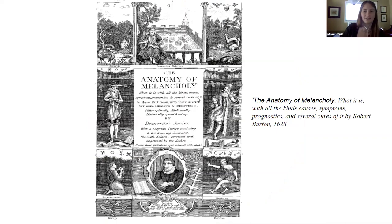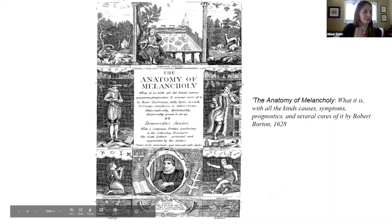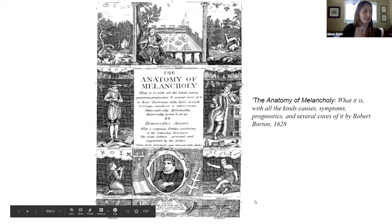This is actually the cover of a scientific novel called 'The Anatomy of Melancholy: What Is It, with All the Kinds, Causes, Symptoms, Prognostics, and Several Cures.' This is from 1628. In one corner we can see religion is very important, and there are images of flowers and different disorders depicted on the cover.